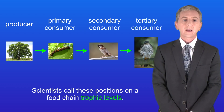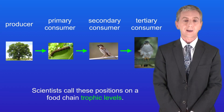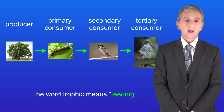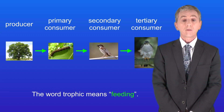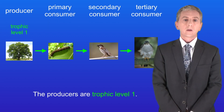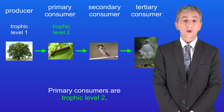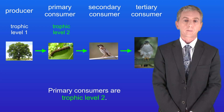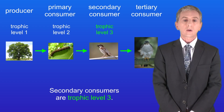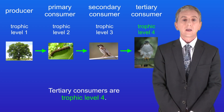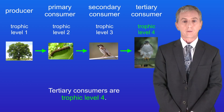Scientists call these positions on a food chain trophic levels, and the word trophic means feeding. So the producers are trophic level one, primary consumers are trophic level two, secondary consumers are trophic level three, and tertiary consumers are trophic level four.